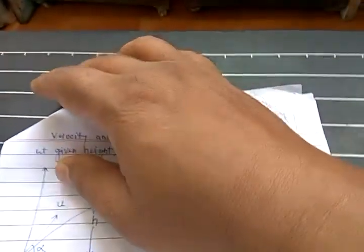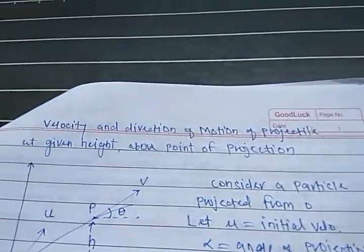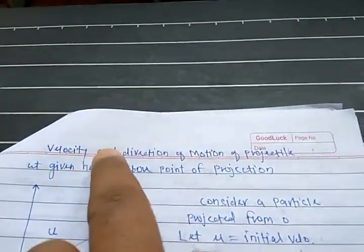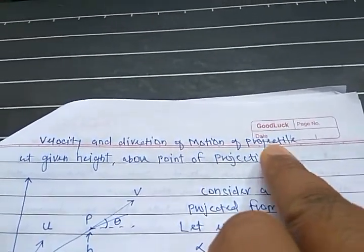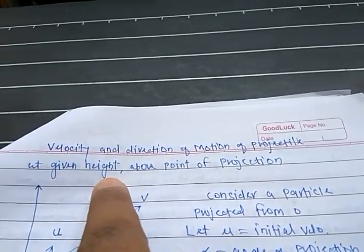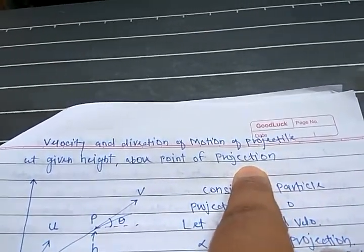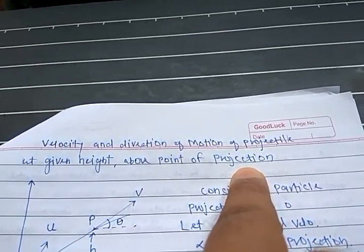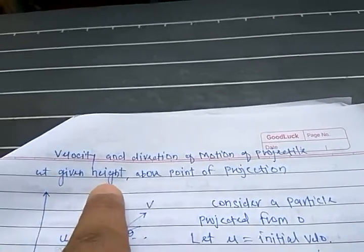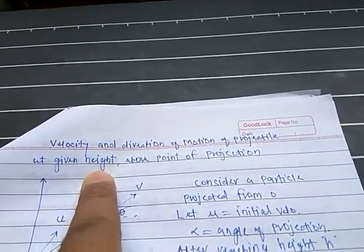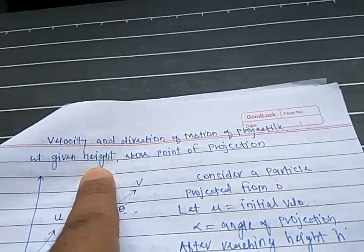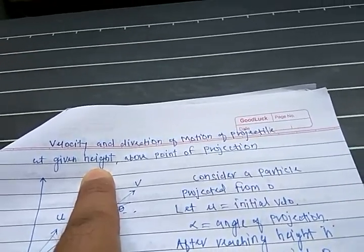Hello students, we will see the next bit: velocity and direction of motion of a projectile at a given height above the point of projection. It is at a given height, which is different from the earlier one — that was at a different time T, whereas here it is H.